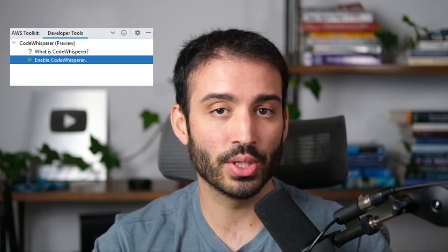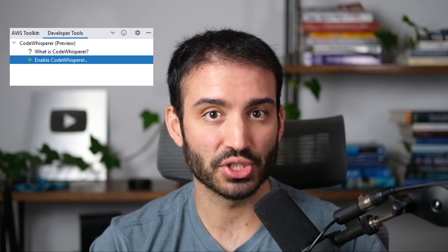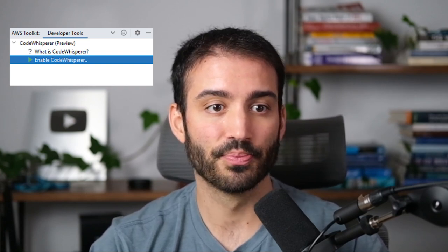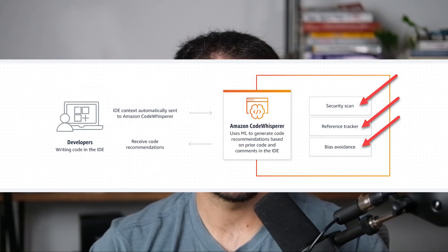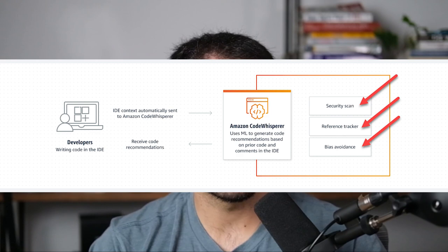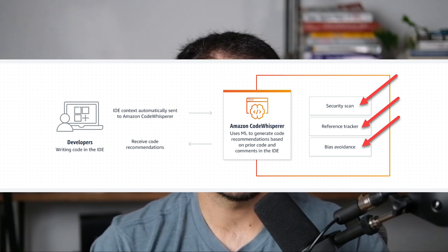In terms of how Code Whisperer works, first you need to install the AWS Toolkit, a popular library used to add AWS functionality to your IDE. Once installed, you can enable Code Whisperer, which appears as new functionality in the toolkit. As you develop, that information is transferred to AWS servers where it's run through a security scan, a reference tracker, and a bias avoidance engine before suggestions are returned to you in your developer environment.